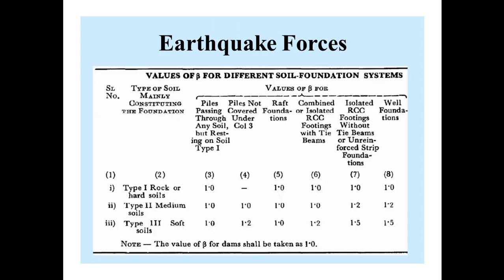From this table we get the value of beta, the soil foundation system factor. For different types of soil and different foundations, we have different values. For example, for Type 1 rock or hard soil with piles resting on soil Type 1, the value of beta is 1. Similarly, for Type 2 medium soil and Type 3 soil, beta is also 1. According to the foundation and type of soil, we select the value of beta from this table.